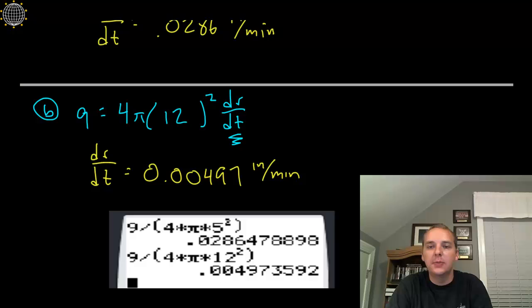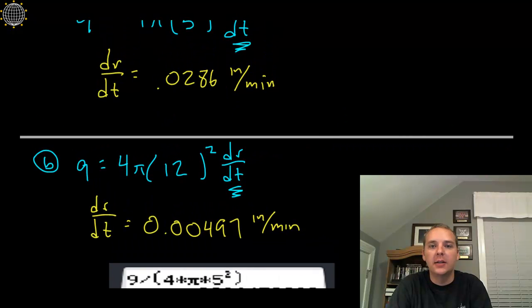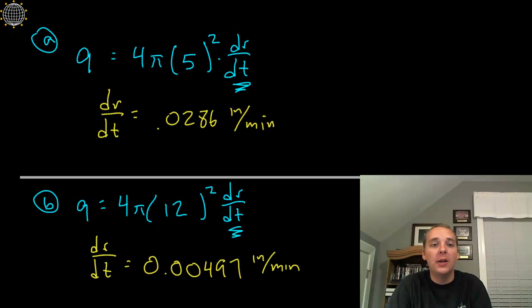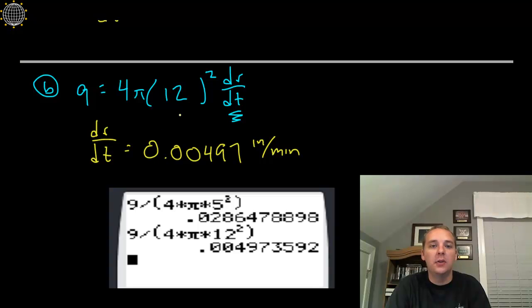Okay so it looks like this balloon isn't being blown up very fast, that's why we got such small answers here. But yeah the radius is increasing faster when the radius is smaller when we tested it, and slower when we checked it for the larger radius, so all this intuitively makes pretty good sense.